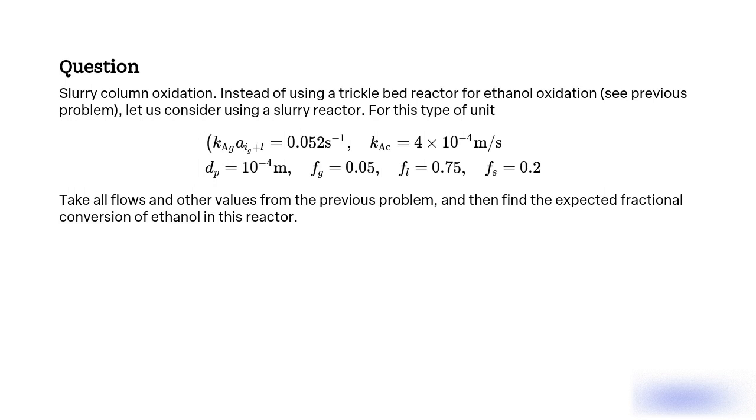What is the expected fractional conversion of ethanol in a slurry reactor using the given values and flows from the previous problem?